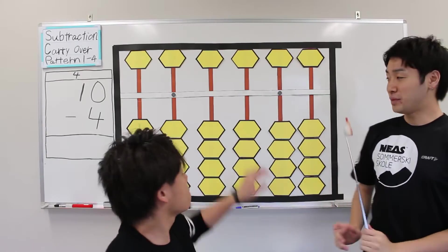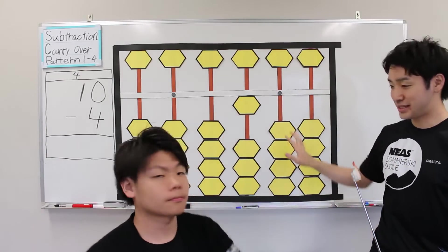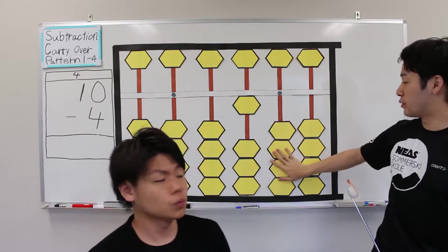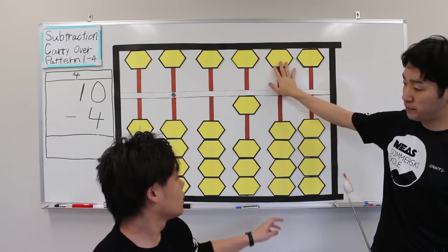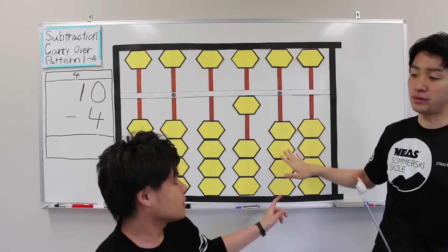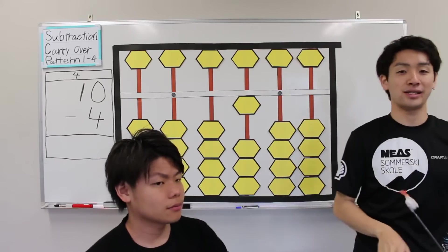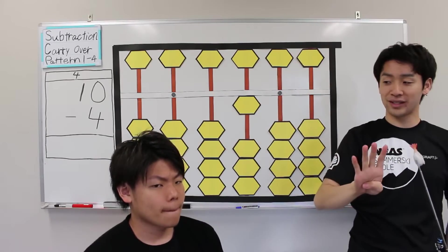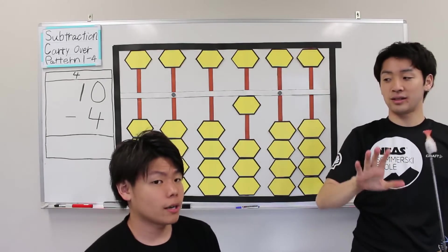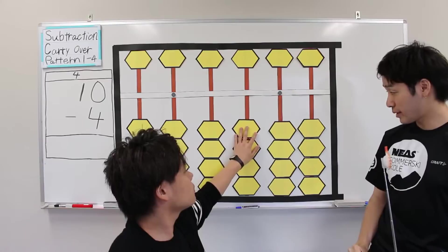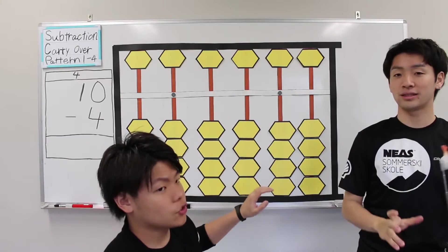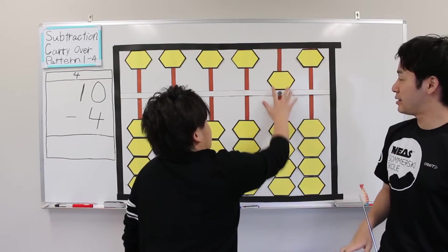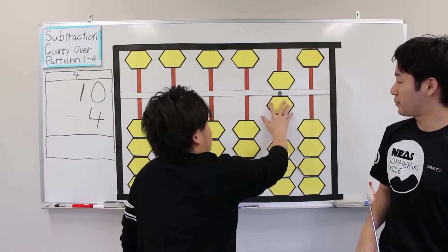Plus 10. Next, minus 4. 2, subtract 4, subtract 10, and add 6. Yes, 6. The answer is 6.